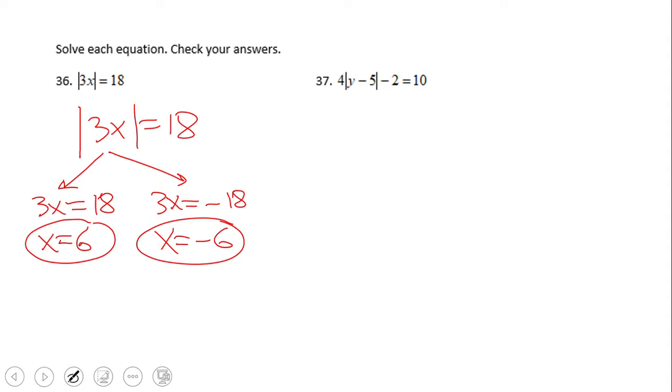Let's go to number 37, which is a little bit different. You see we have four times the quantity that is in absolute value, 4y minus 5, minus 2 equals 10. So the first thing you want to do in this type of inequality is to solve for the absolute value.